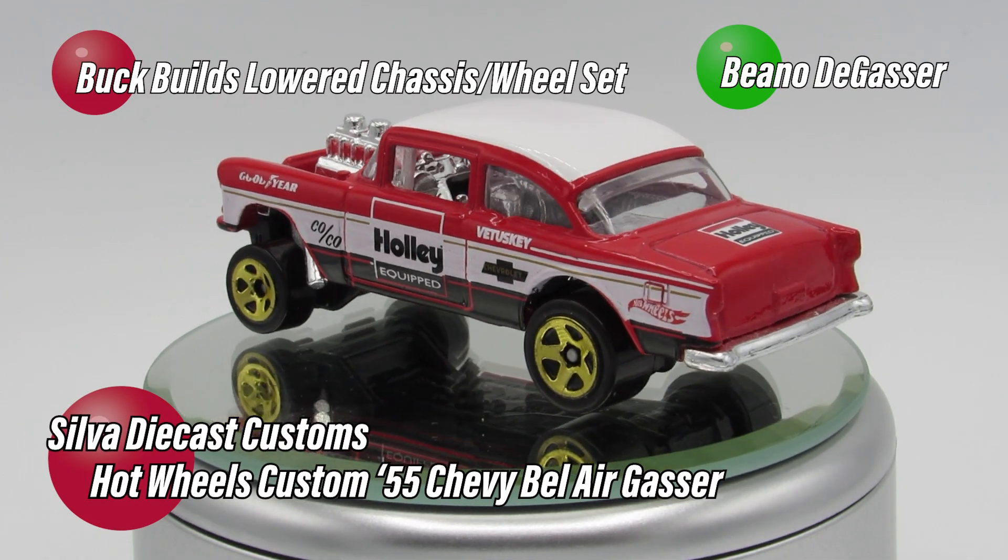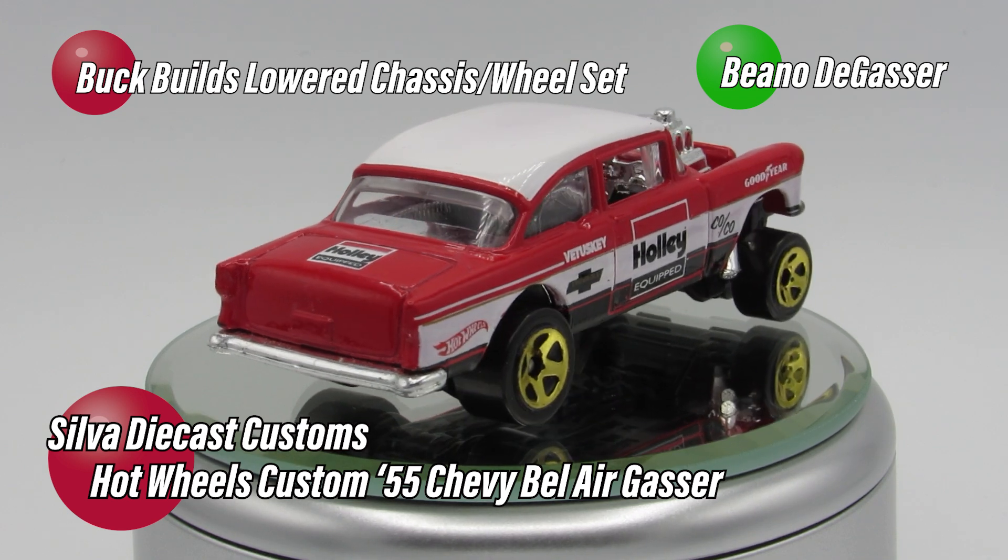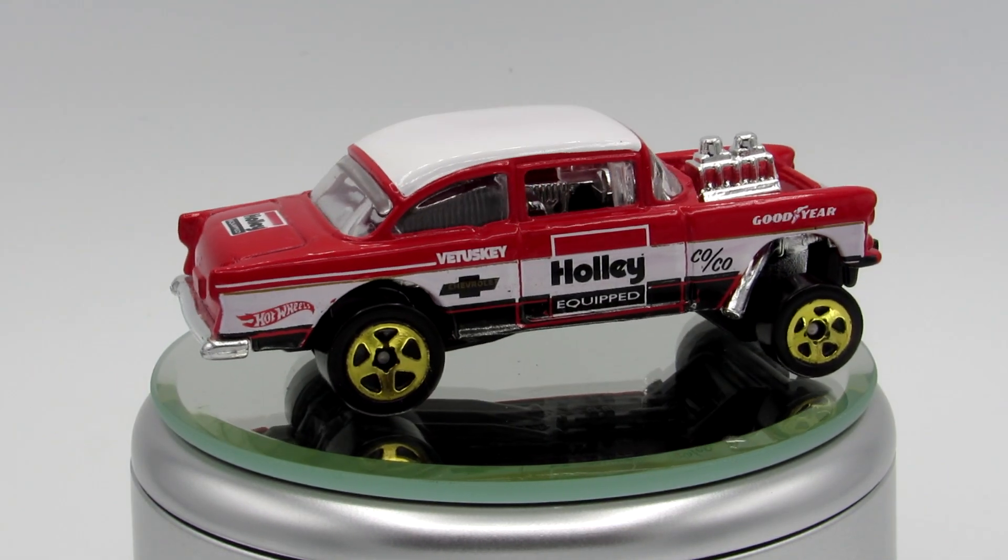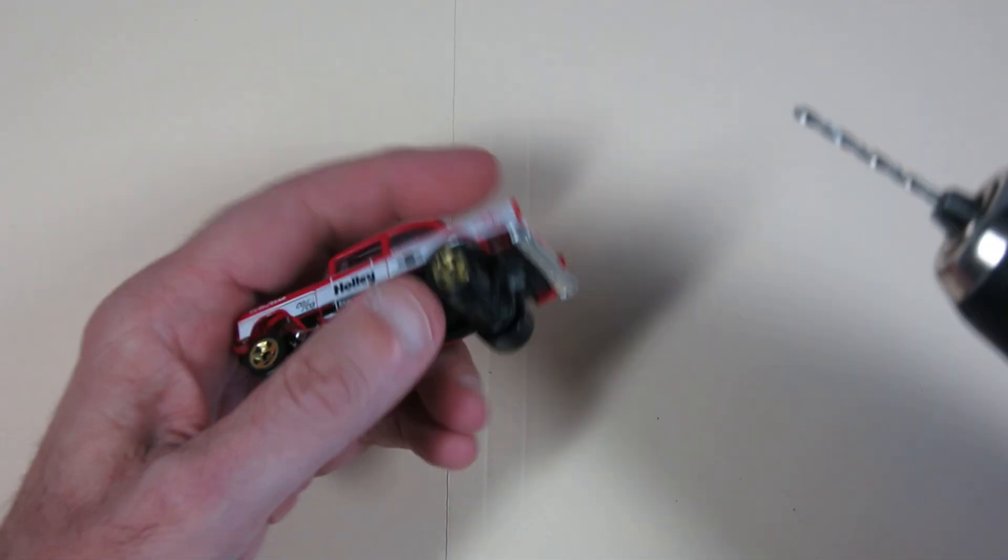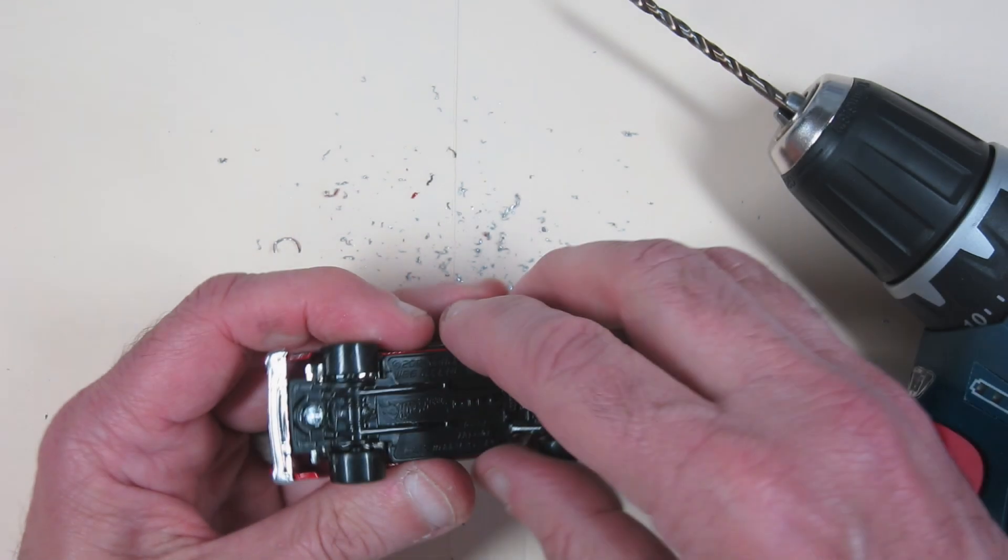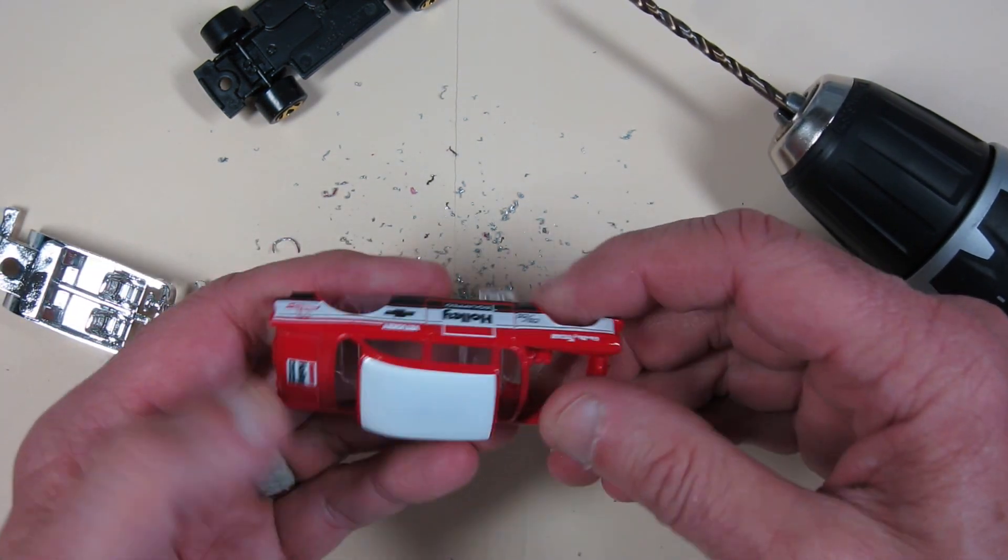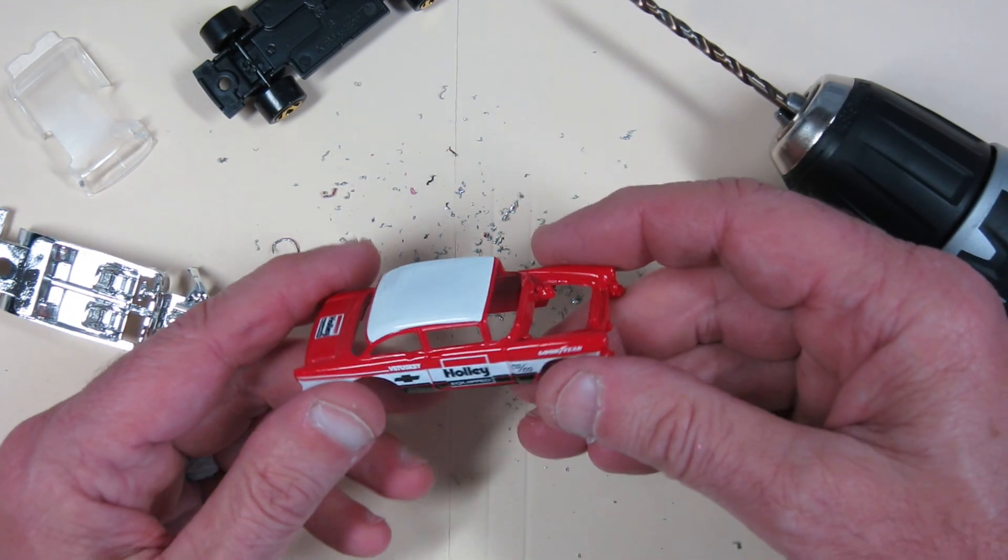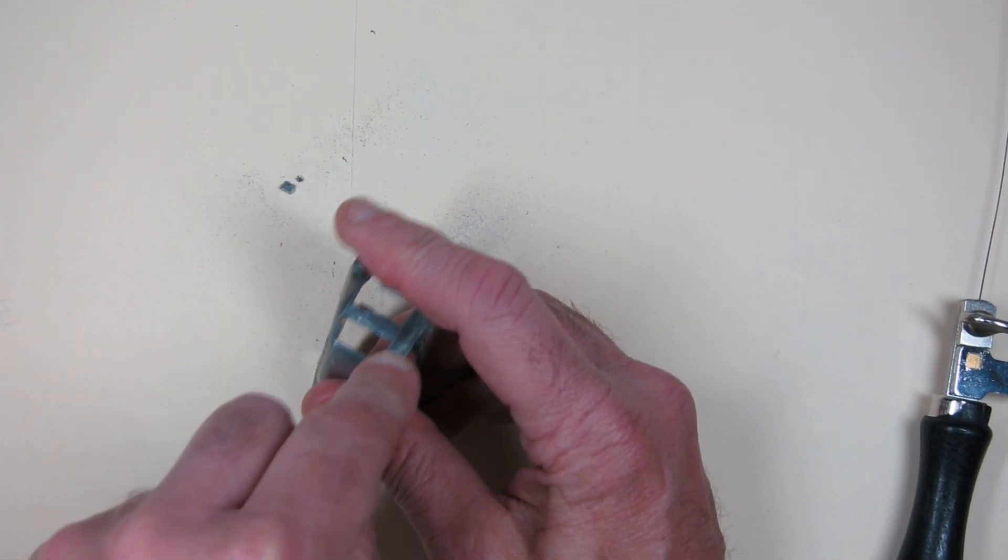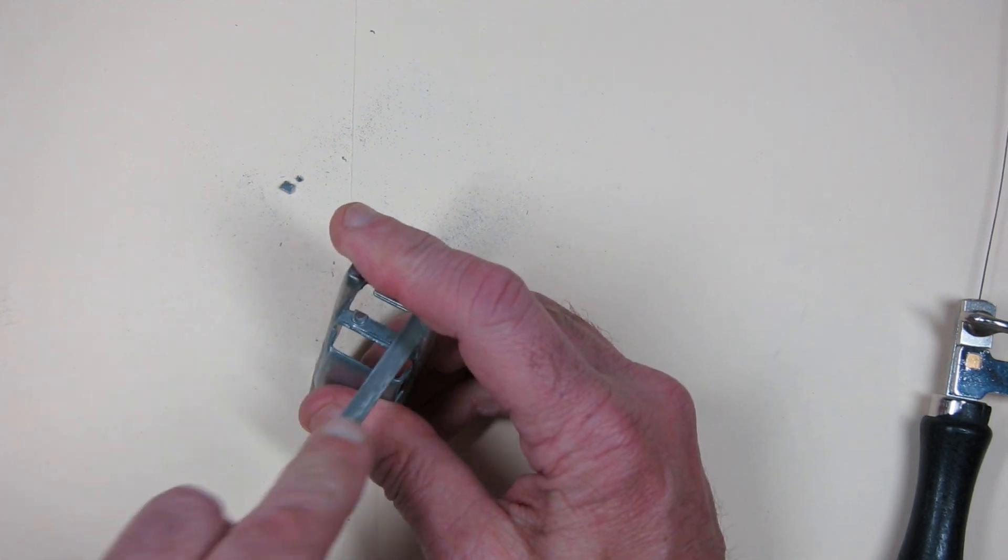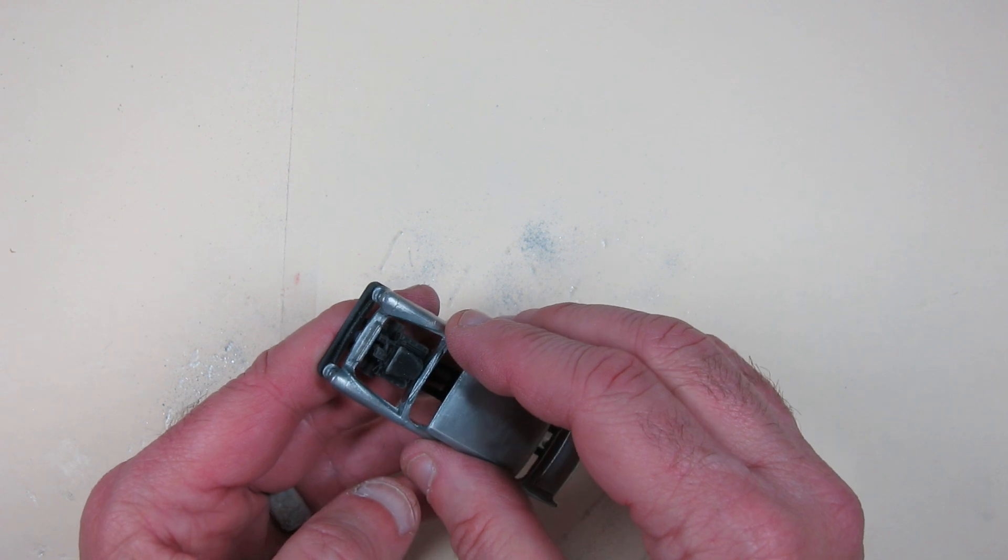As you know from the title, I'm taking a Hot Wheels 55 Chevy gasser and de-gassing it. I've never been a big fan of gassers - I don't hate them, they're okay, but it's not something that really draws me to work on them usually. A while back I came across a resin printed frame at an online source, and I came up with the idea of doing the Beano no-gasser. For those familiar with Beano the medicine, it de-gasses you, so it seemed like a great little gimmick for the build. But I wasn't really drawn to it.